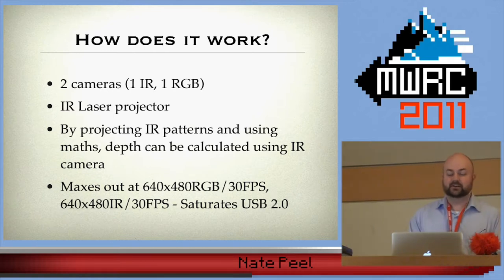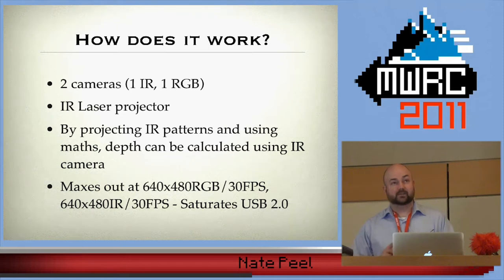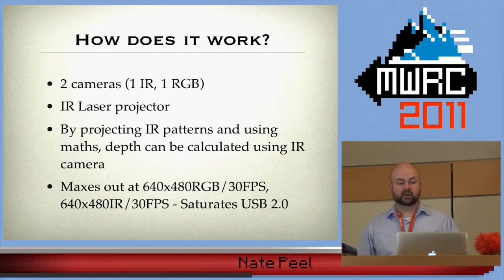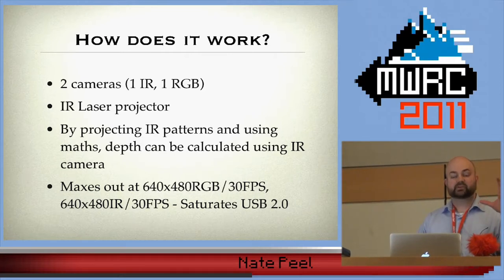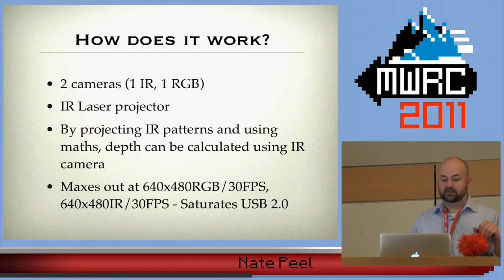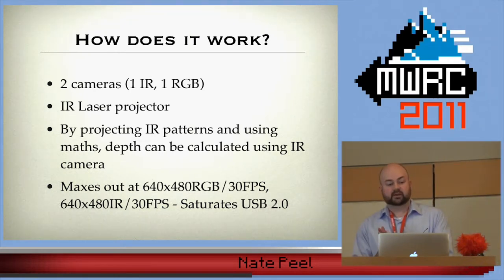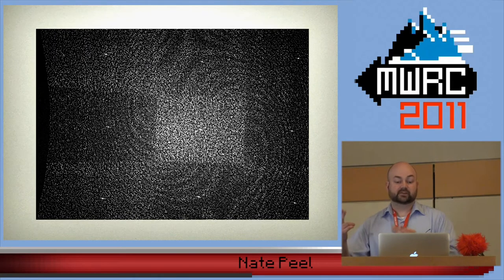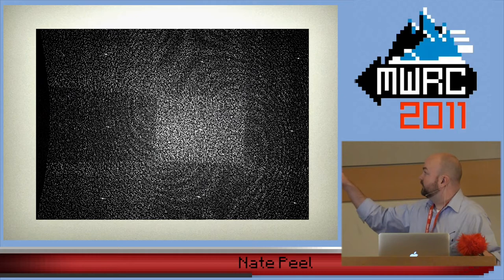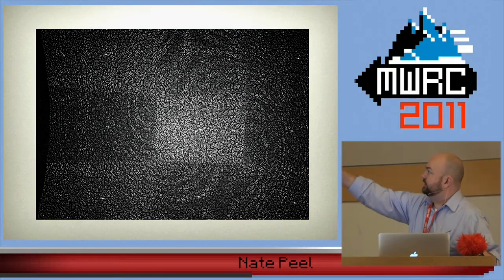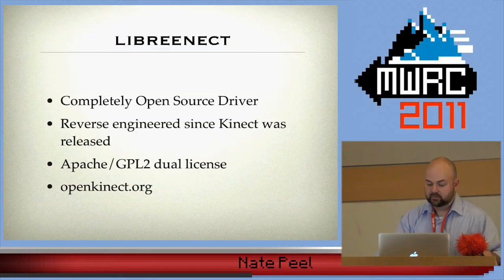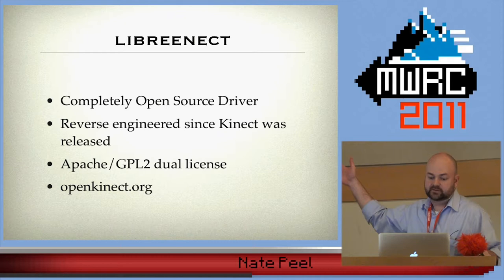How does it work? There are two cameras on the front of the Kinect: one is an infrared camera and one is an RGB camera. There's also an infrared laser projector mounted to the side. By projecting micro patterns using the IR projector, we can calculate depth on the fly using the IR camera. Both cameras have a maximum resolution of 640 by 480 and capture at 30 frames per second. If both are running they actually saturate USB 2.0. This is an example of what the patterns look like — you can see how they split the frame into different quadrants and project patterns toward the scene to gauge depth.